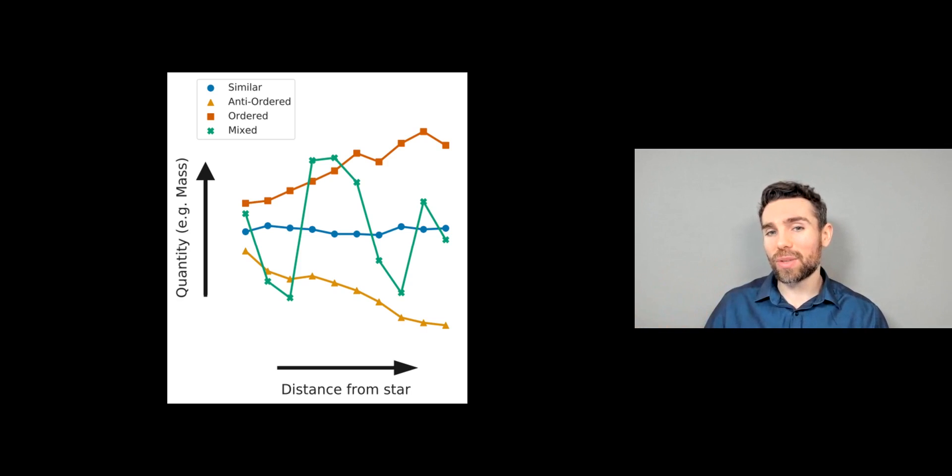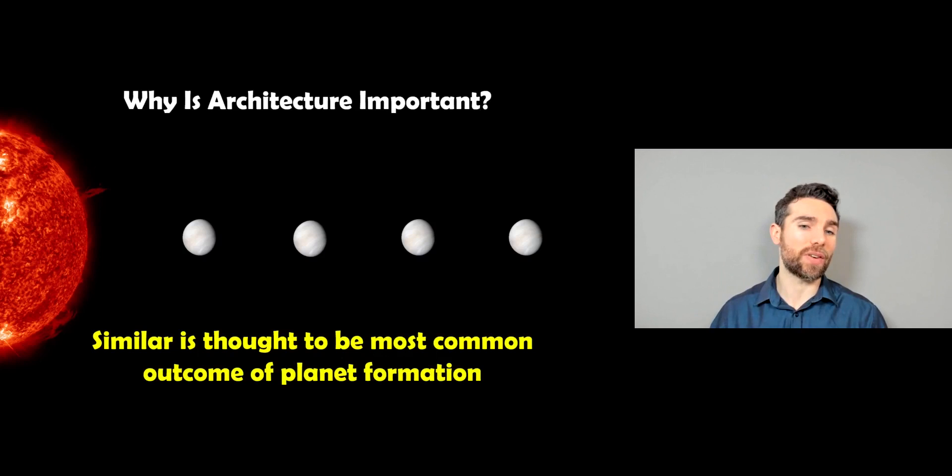Now, another reason why we want to classify these—if we've got lots and lots of planets and these planetary systems—well, the architecture of it can be quite important. For example, a similar system, where they're all relatively similar to one another, is thought to be probably one of the most common outcomes of planet formation. So when they form in a disk, we expect that this is the most common outcome of them forming in the disk around the young star.